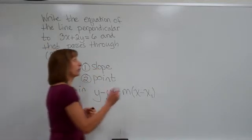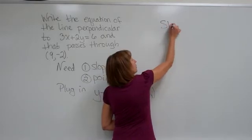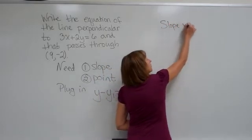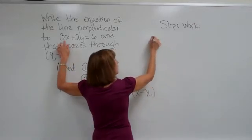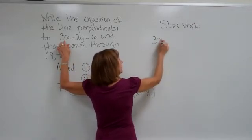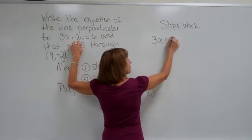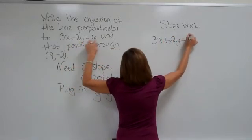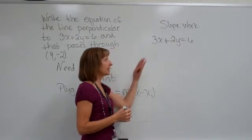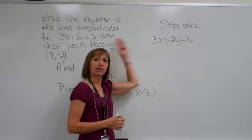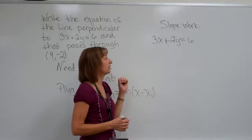So we need to come over and do a little bit of work for our slope. In this example, we need to first find the slope of the line 3x plus 2y is equal to 6, and then we'll be able to see what this slope is and get our slope of our perpendicular line.